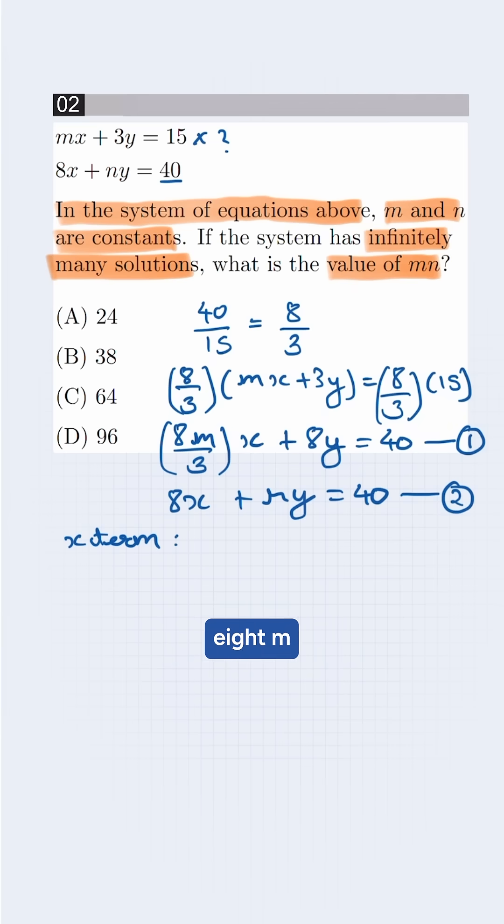For x term, 8m by 3 is equal to 8, so m will be 3. For the y term, n is equal to 8.